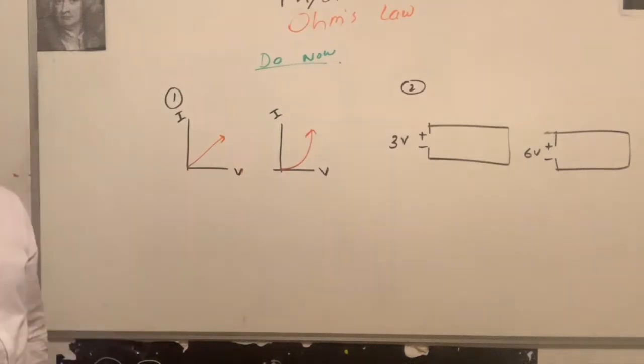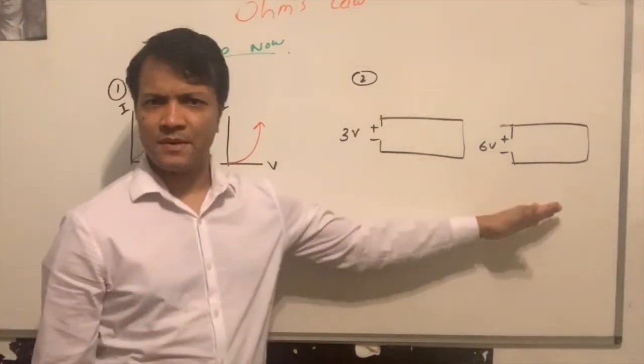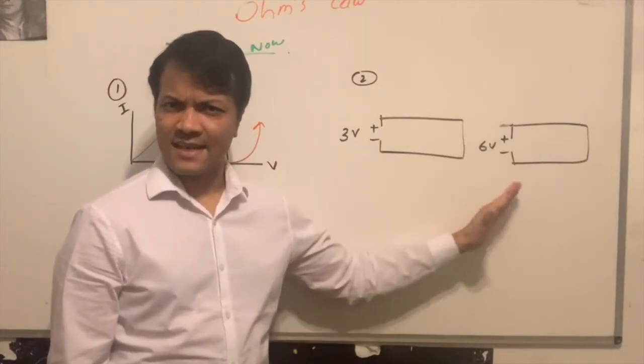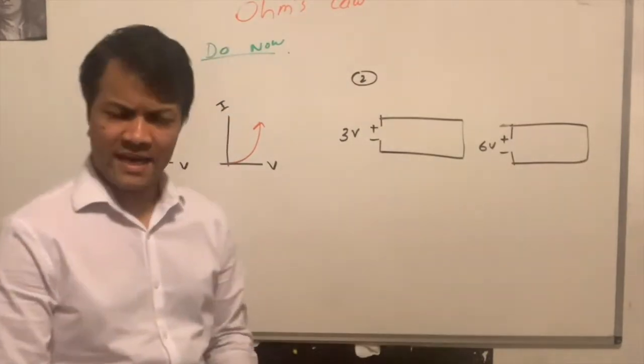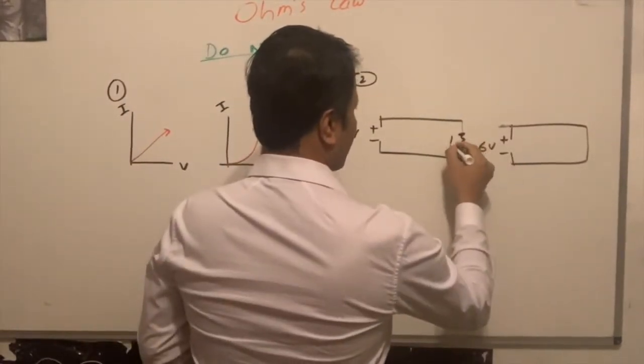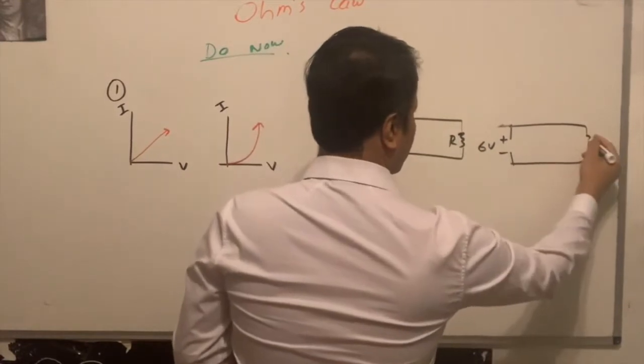Explain the relationship between boundaries and current. Explain the two circuits in terms of current, keeping the R same. You're going to keep that? Gary, can I work with you? Keep the R same.